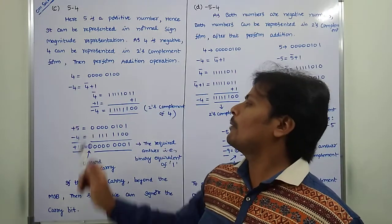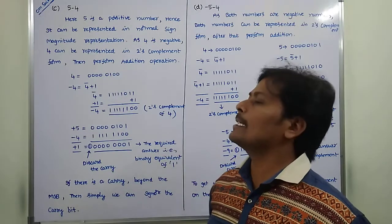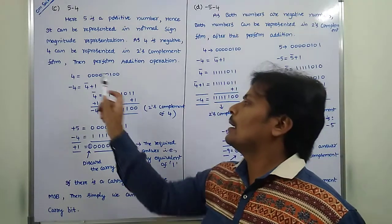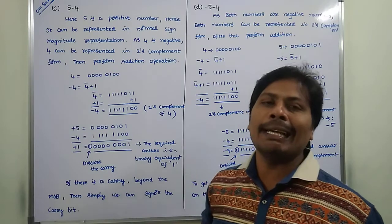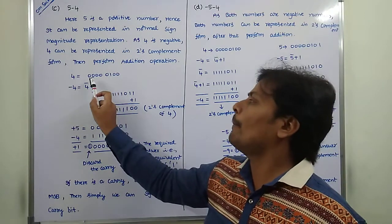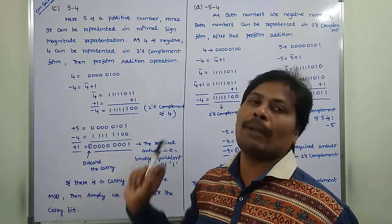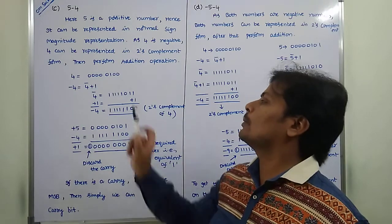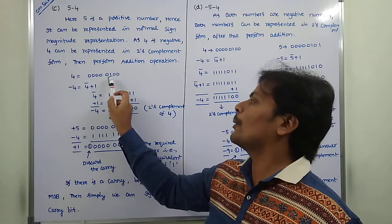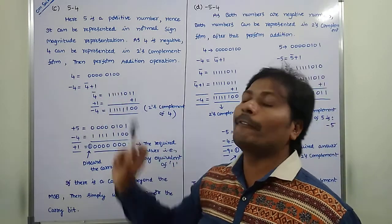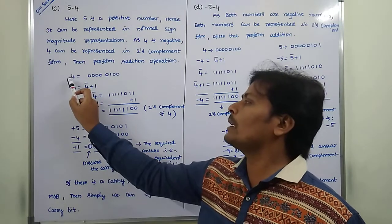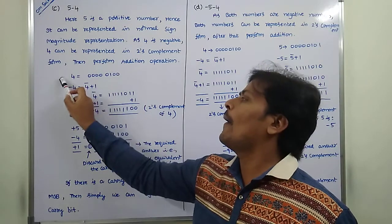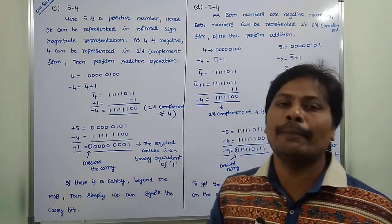First we are taking minus 4. Minus 4 can be represented in two's complement form. First, 4 is represented in binary form. Plus 4: the sign bit is 0, and the binary form of 4 is 0100. The remaining bits are filled with 0 because 4 is stored in an 8-bit register. So this is the binary form of 4 in the 8-bit register.